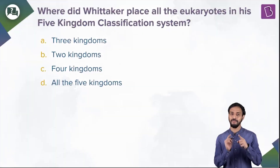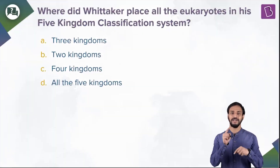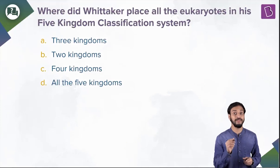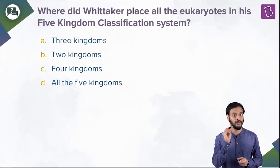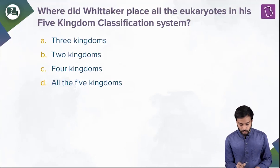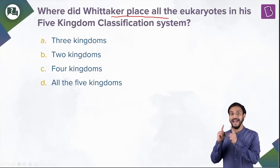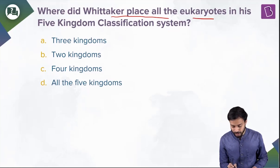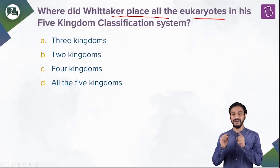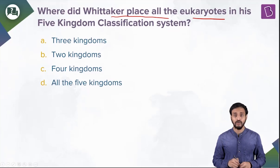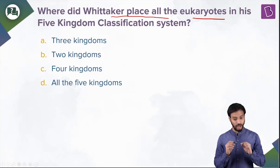This is a conceptual question. Where did Whittaker place all the eukaryotes? Pay attention — we are talking about all the eukaryotes in his five kingdom system of classification. What would be the answer? Let's see the options first.